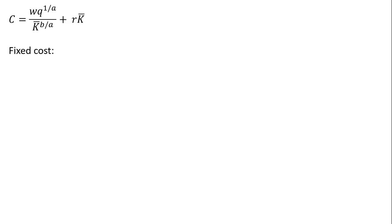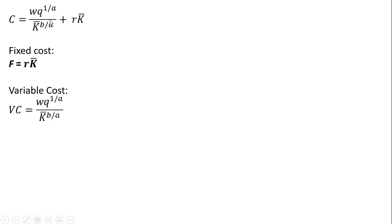Let's find the six other cost functions. First, let's get fixed cost. Fixed cost is just R times K bar — F represents fixed cost, and it equals R times K bar. Variable cost is the other component in the cost function. Remember, cost is variable cost plus fixed cost, so we can rewrite the first term on the right-hand side as variable cost.